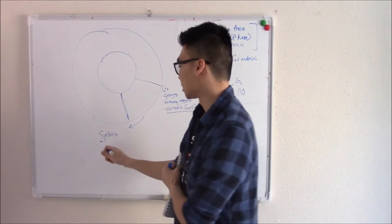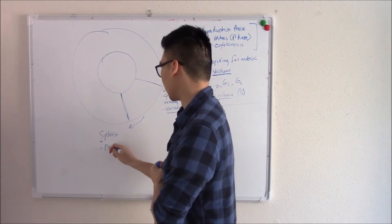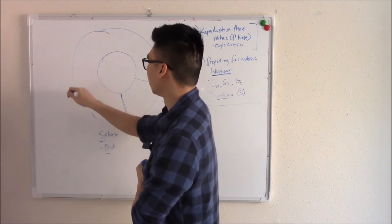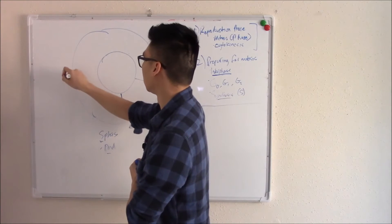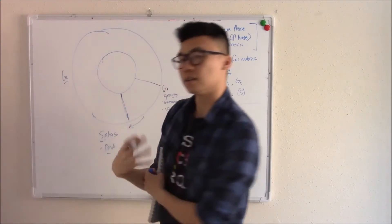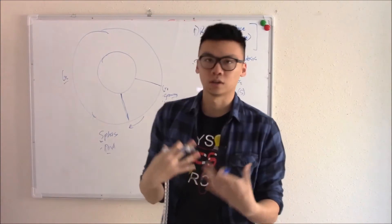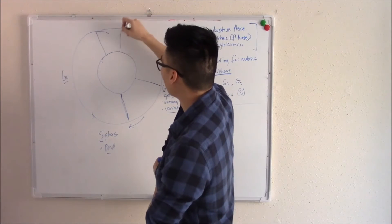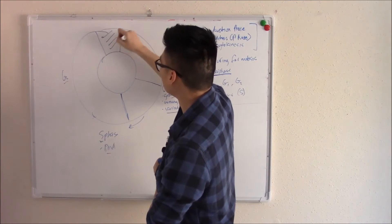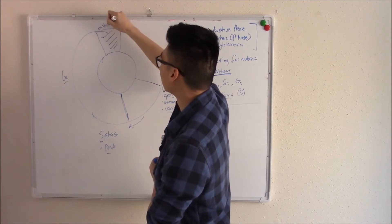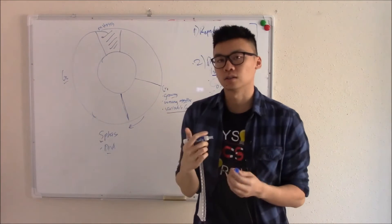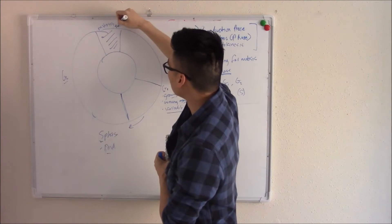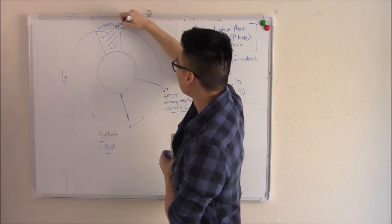So we go into the S phase — this is where you make and replicate DNA, synthesis, that's why they call it the S phase. Once you've done that, you go into G2, another growth phase, where you're growing more and increasing more organelles. Finally you're ready for what we've all been waiting for: mitosis. And as important as mitosis is, mitosis is actually the shortest phase.